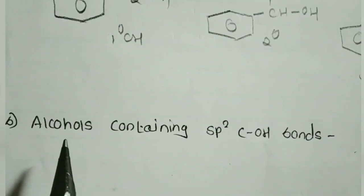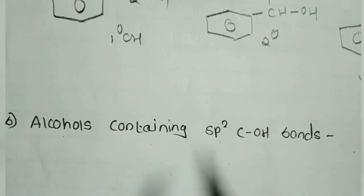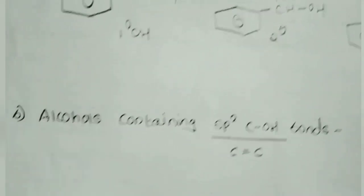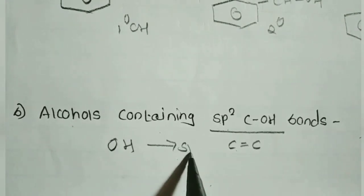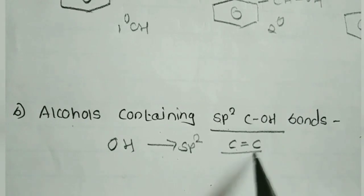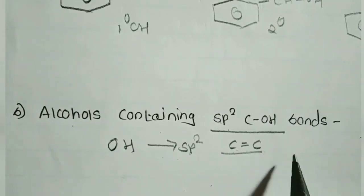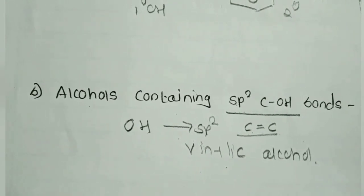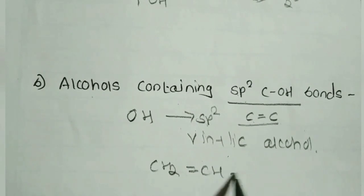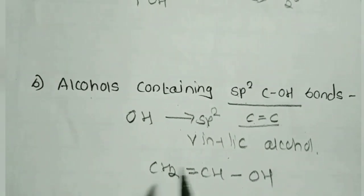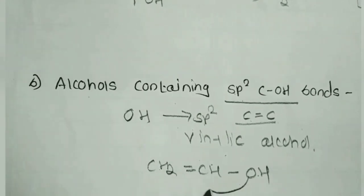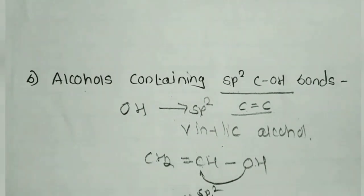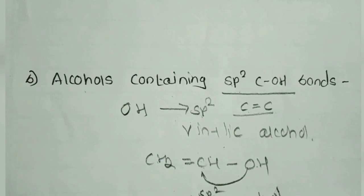The next point is classification of monohydric alcohol on the basis of hybridization — specifically alcohol containing an SP2 carbon–OH bond. SP2 means this carbon is attached to a carbon–carbon double bond, i.e., the hydroxy group is attached to an SP2 hybridized carbon which is part of a C=C bond. This is also called vinylic alcohol. For example: CH2=CH–OH — here OH is attached to an SP2 carbon, so it is called vinyl alcohol.